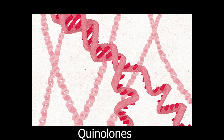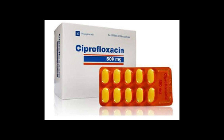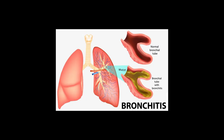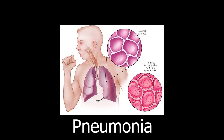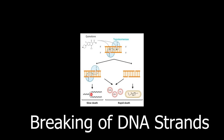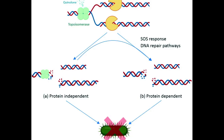The third example of antibiotics is quinolones. Quinolones include antibiotics like ciprofloxacin and levofloxacin, which are used to treat infections like bronchitis and pneumonia. When bacteria begin to copy their DNA, quinolones cause the strands to break and then prevent the breaks from being repaired. Without intact DNA, bacteria cannot live or reproduce.